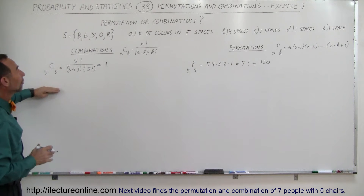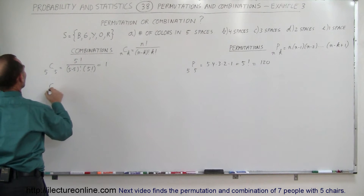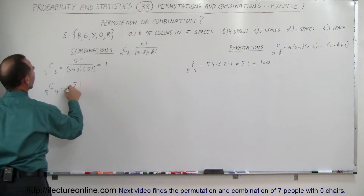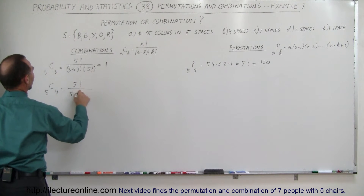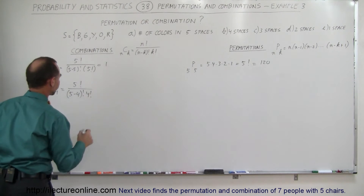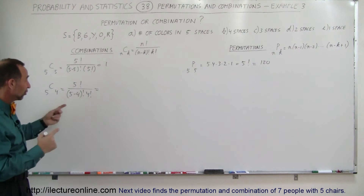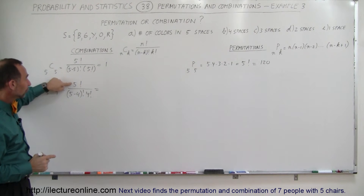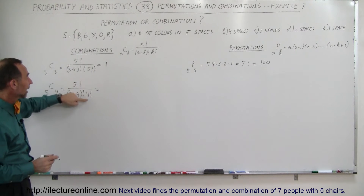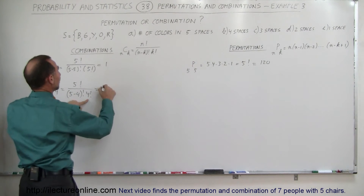Now for four spaces: the number of combinations C(5,4) equals five factorial divided by (five minus four) factorial times four factorial. Five minus four factorial is one factorial, which is one. And five factorial divided by four factorial — four times three times two times one cancels out — leaving just five. So there are five combinations of five colors in four spaces.